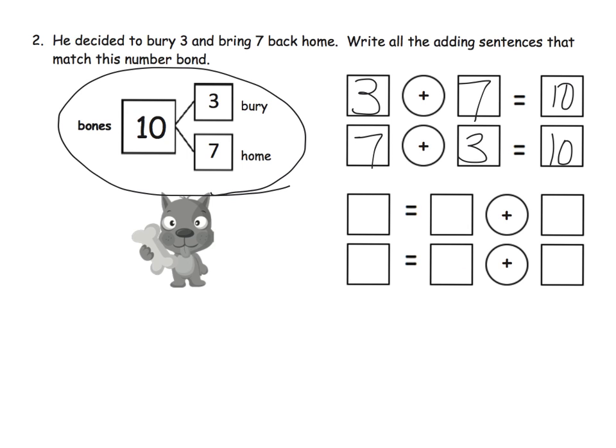And then we're going to continue. And notice now the answer, or in this case the sum, is on the left side of the equation. So our equation would look like ten equals three plus seven and ten equals seven plus three.